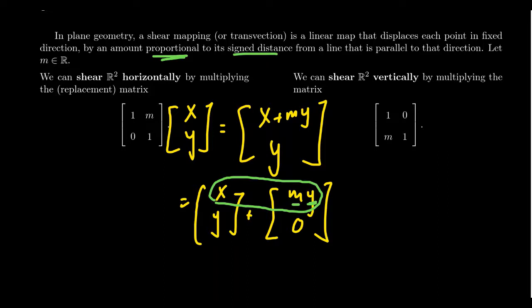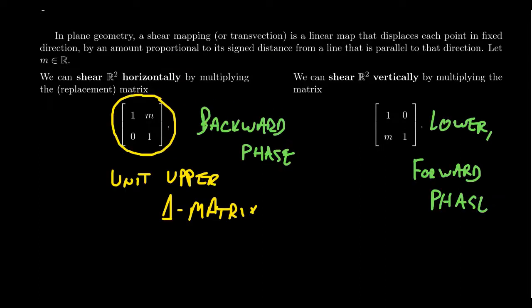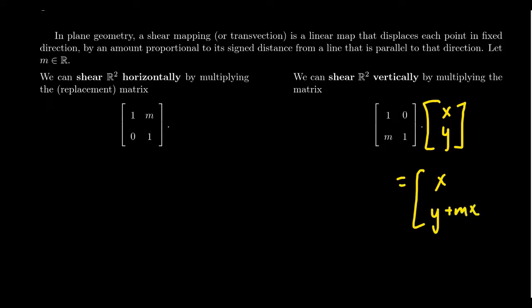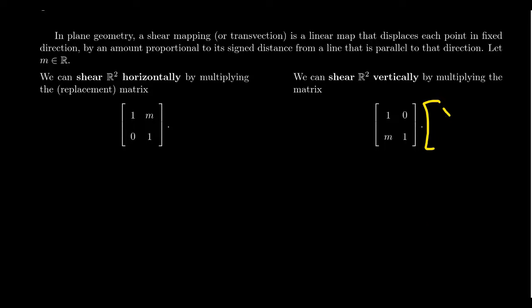If you're shearing along the x-axis, you're going to add some multiple of the y-coordinate to x. You see the same thing happening with the lower triangular matrix: when you multiply it by (x, y), you end up with x and y plus M·x. So you're going to change the y-coordinate proportional to x by a factor of M. Multiplying by unit upper triangular matrices causes a horizontal shear, and multiplying by a lower triangular matrix causes a vertical shear.